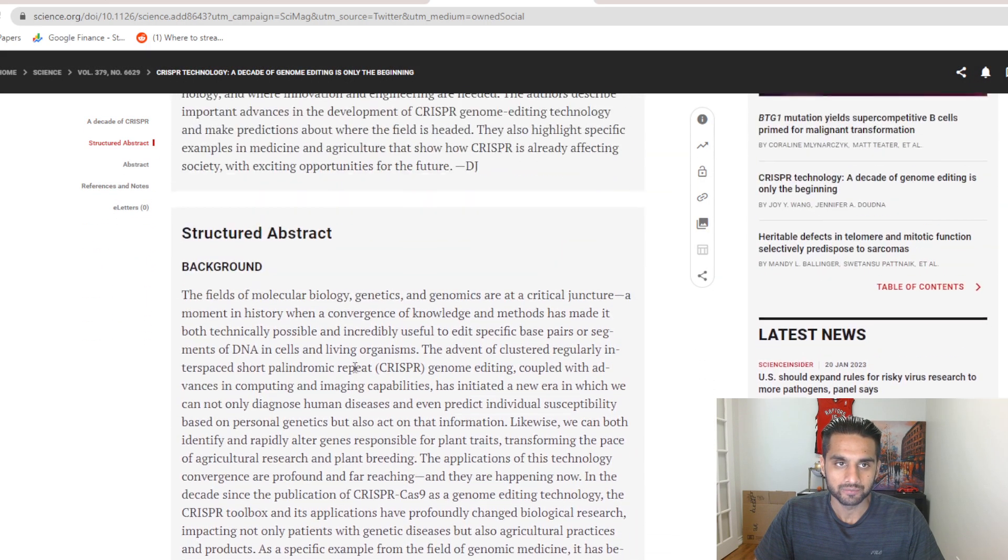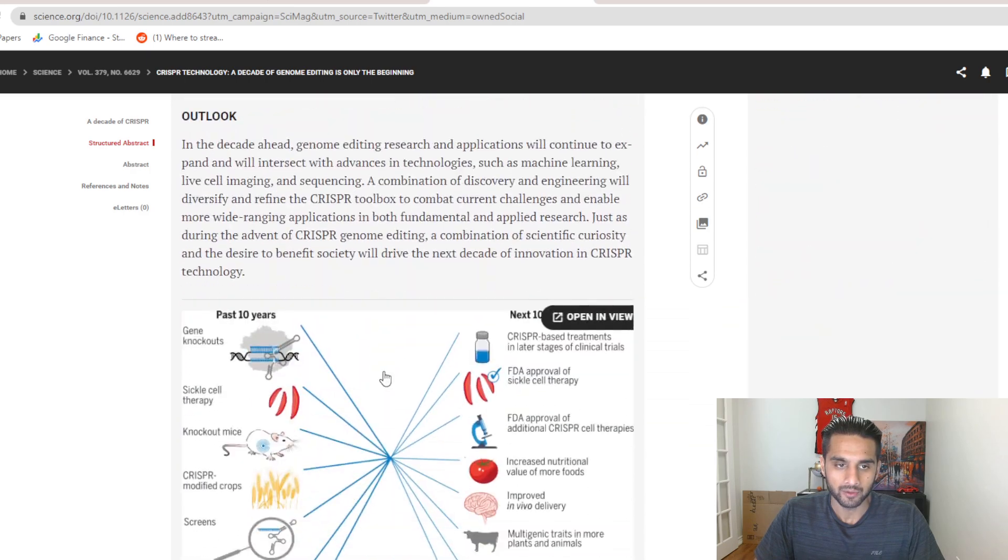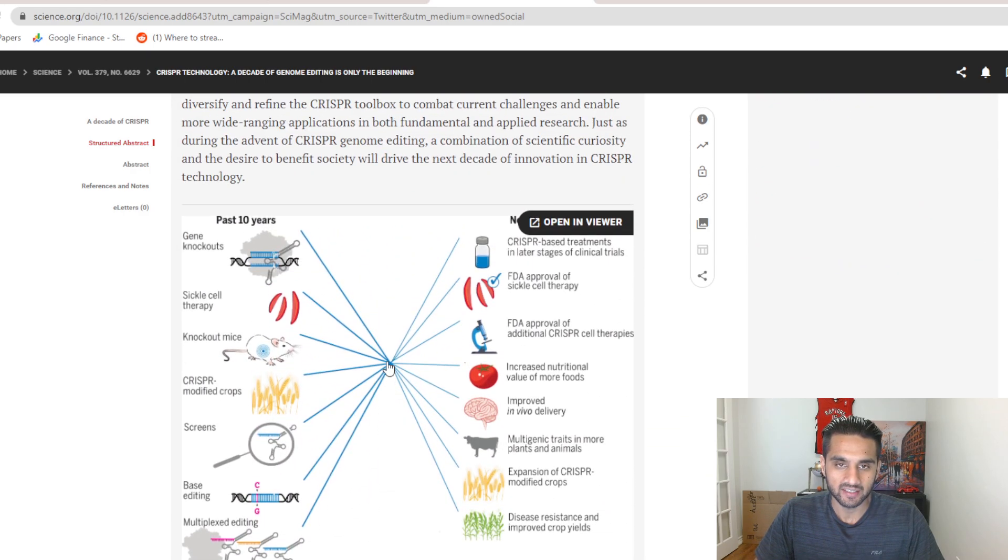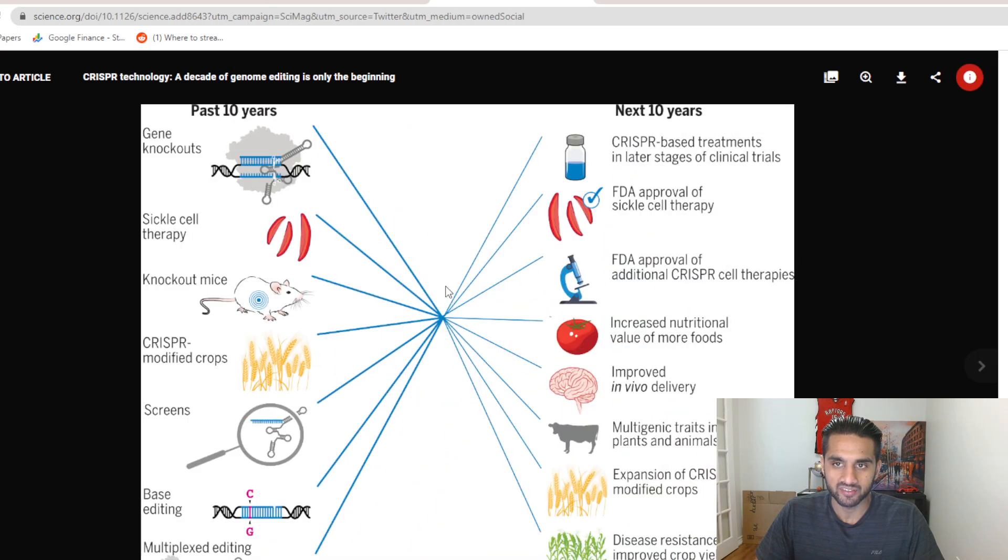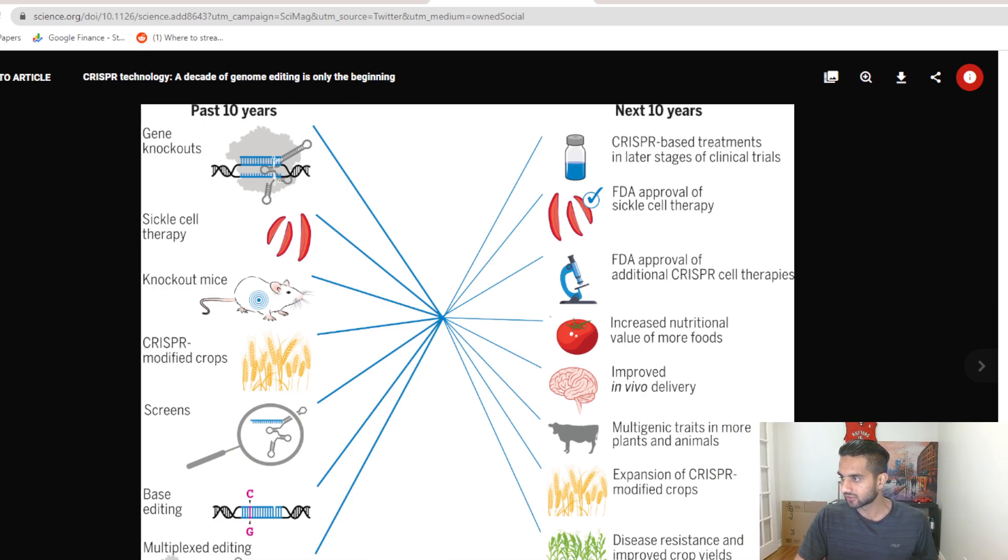Doudna reviewed the origins and utility of CRISPR-based genome editing, the successes and current limitations of technology where innovation and engineering are needed. The authors describe important advances in the development of CRISPR-based genome editing technology and make predictions about where the field is headed. They also highlight specific examples in medicine and agriculture that show how CRISPR is already affecting society with exciting opportunities for the future. Here we look at the paper, and really the most important part is this diagram here that we're looking at. Let me minimize my face. If you take a look at the left side, that's the past 10 years of CRISPR. If you take it to the right side, that's the next 10 years of CRISPR.